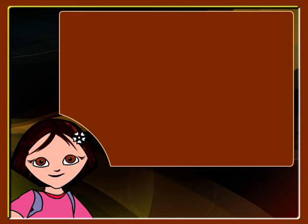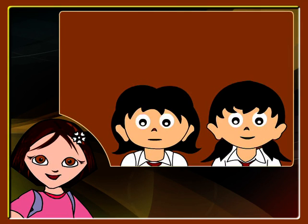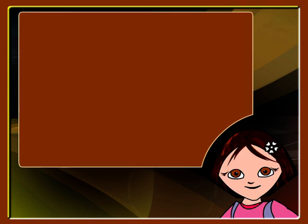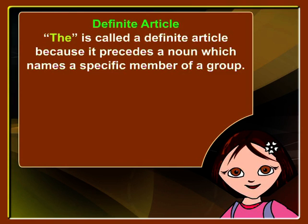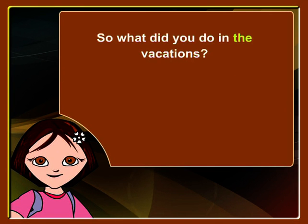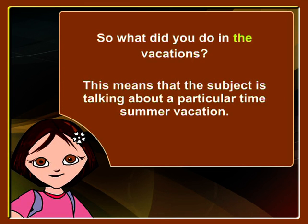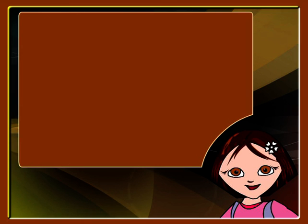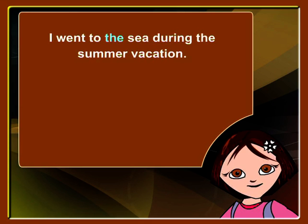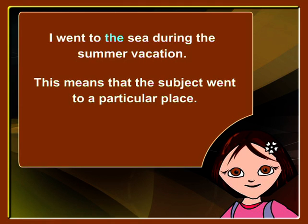The definite article is used before all nouns when referring to specific things. Let us hear a conversation between Rohini and Anita on how they spend their vacations. Rohini says: 'Hi Anita, good to see you back in school. What did you do in the vacations?' Anita replies: 'Hi Rohini, it is nice to come back after a great holiday. I went to the sea during the summer vacation.' THE is called a definite article because it precedes a noun which names a specific member of a group. In the question 'What did you do in the vacations?' the word THE indicates that the subject is talking about a particular time.